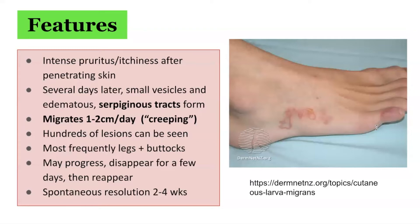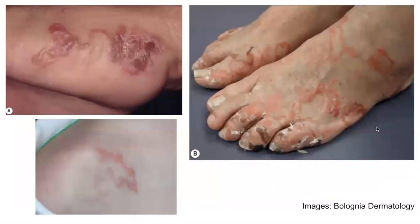On average, spontaneous resolution occurs after 2–4 weeks. Here are some further images demonstrating cutaneous larva migrans from the Bologna Dermatology textbook. Note the characteristic serpiginous erythematous tracts on the lateral aspect of the foot, on both feet, and on the shoulder areas. These images also demonstrate some secondary changes including vesiculation and crusting, which are sometimes seen with cutaneous larva migrans.